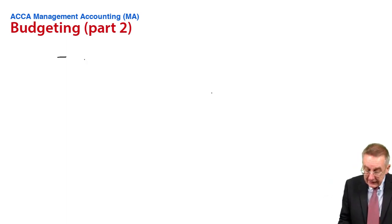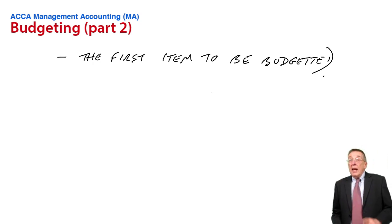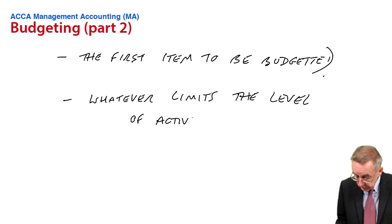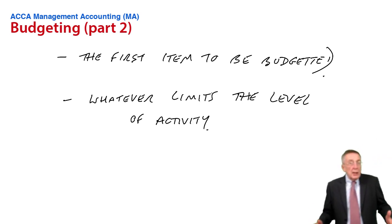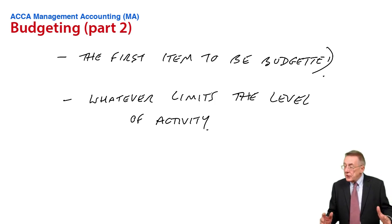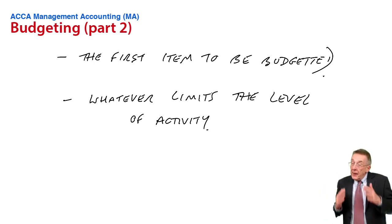So the principal budget factor is the first item to be budgeted, and it's whatever limits the level of activity. Why isn't the business going to be bigger next year? What's stopping us being bigger? Usually, it will be the sales demand. If customers only want 50,000, we can't do much about it. That's what's stopping us being bigger.